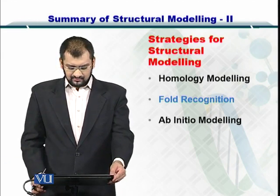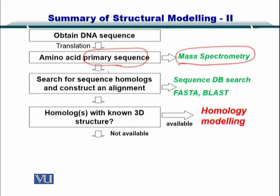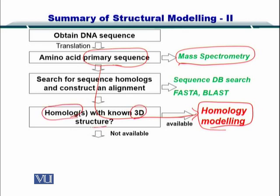In this module we will be reviewing fold recognition. As you can see in this slide, if we had the primary sequence of proteins obtained from either Edman degradation or mass spectrometry, we could move towards homology modeling. However, if we had no homologues with 3D structures, we had to move to a different strategy.